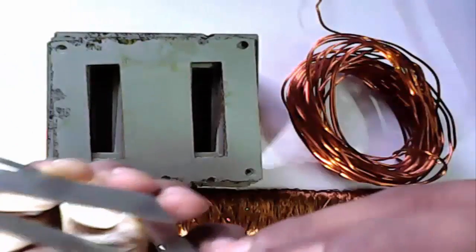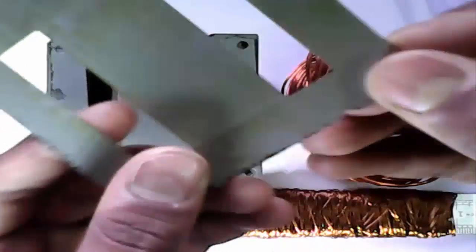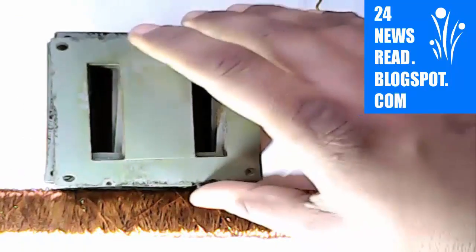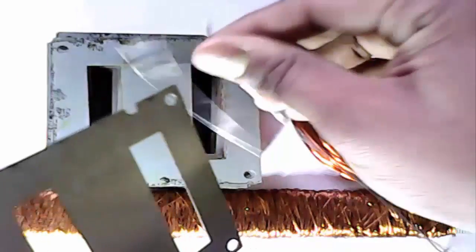This is iron sheet. Now we see how to make a transformer.